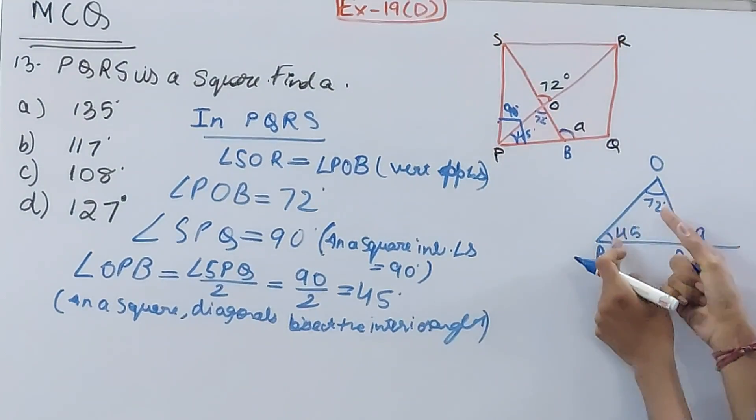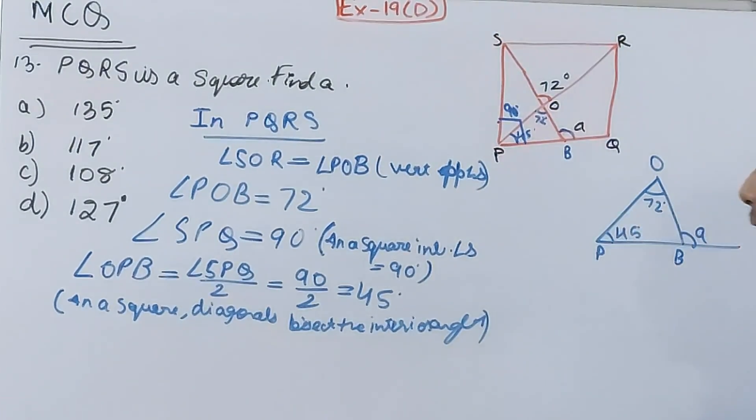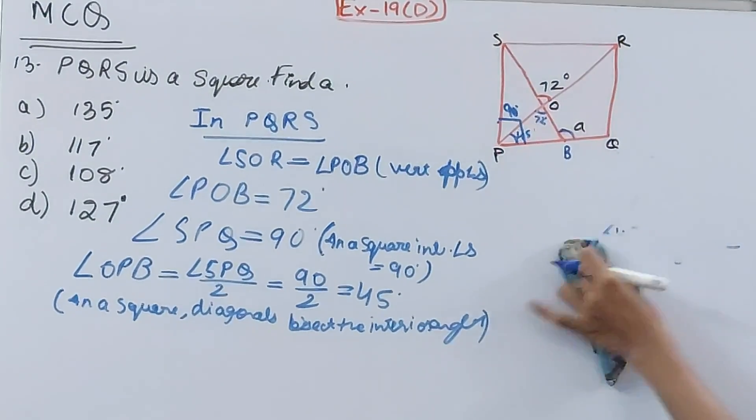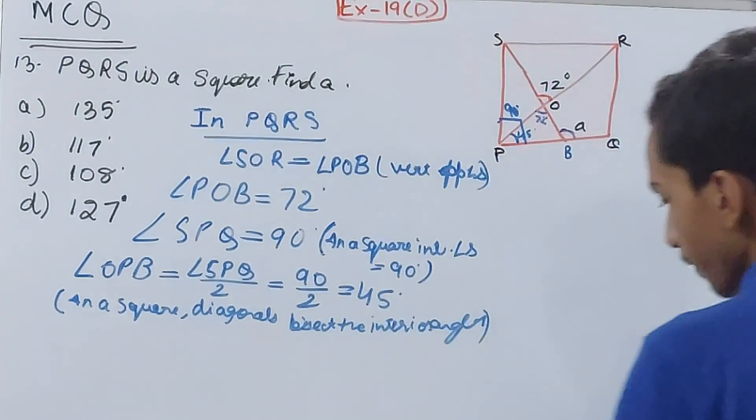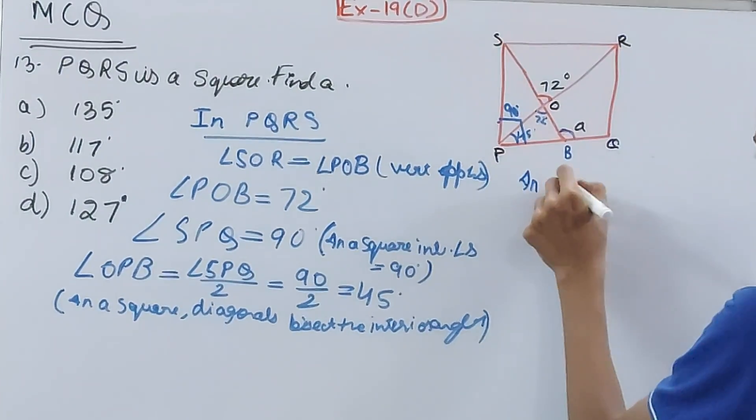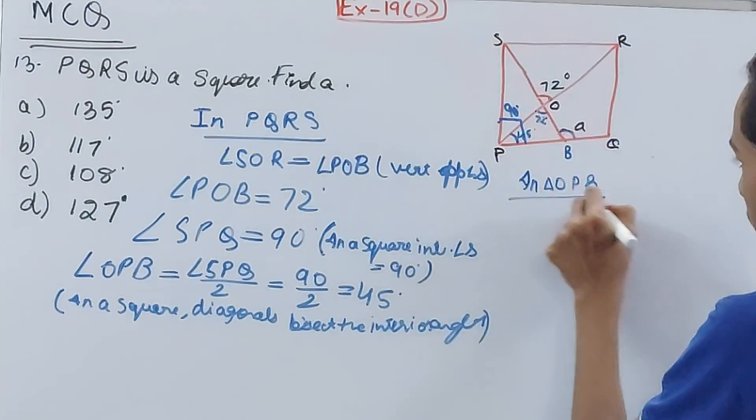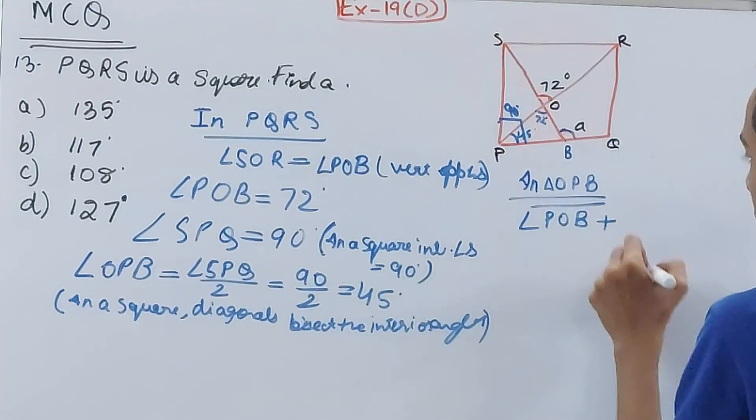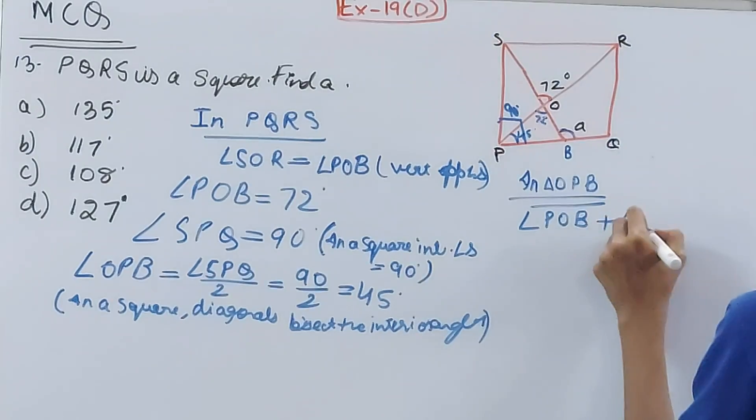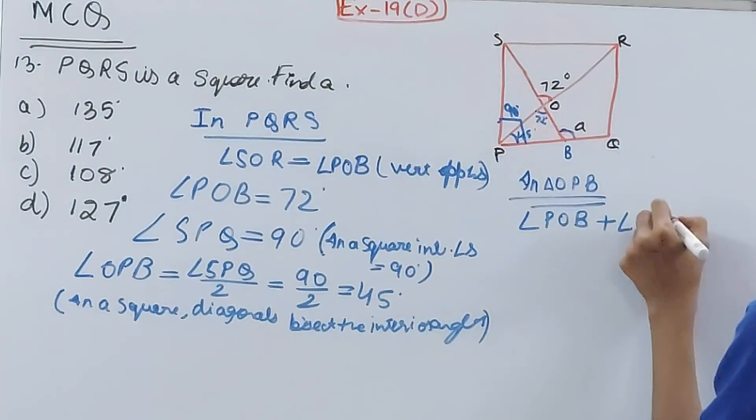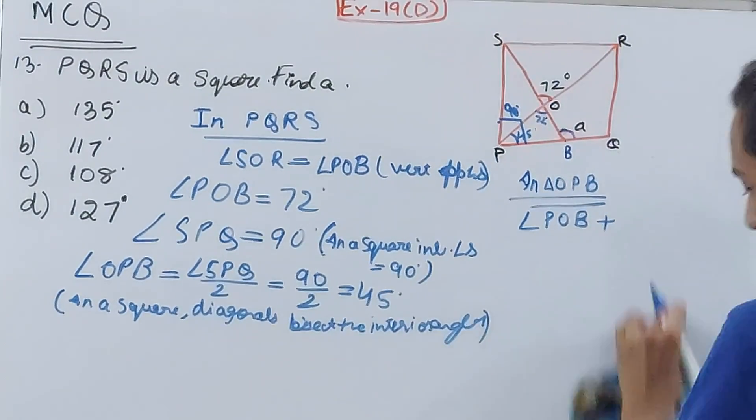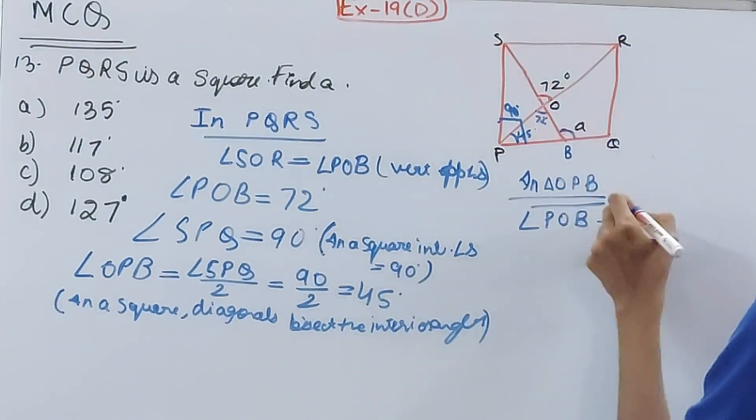Now you use the exterior angle property. So you add these two angles and you will obtain the value of a. So I'm not keeping this figure for long, it's just rough because you can erase it. Come to triangle. Now in triangle OPB, we will have angle POB plus angle OPB equals to a.